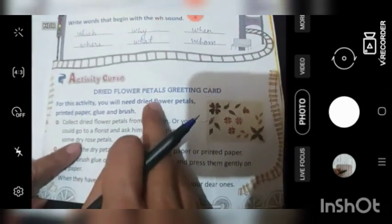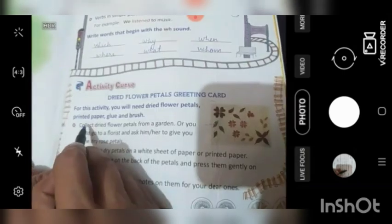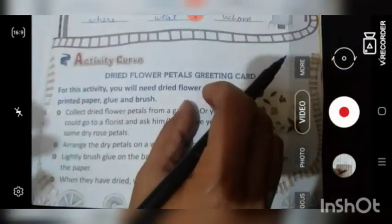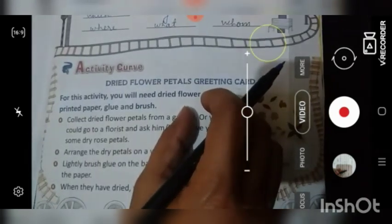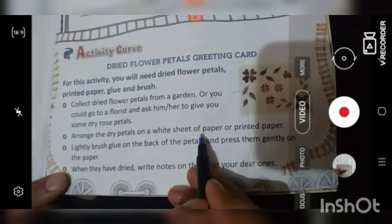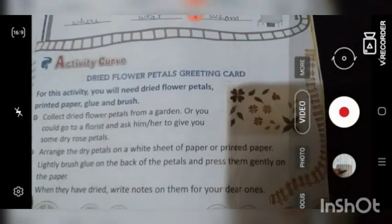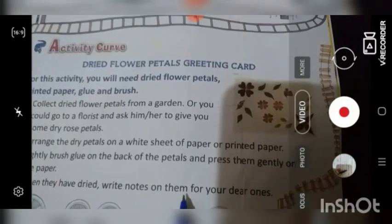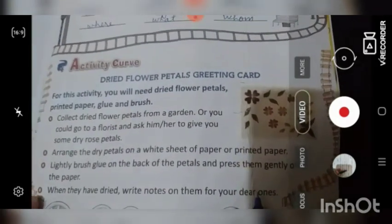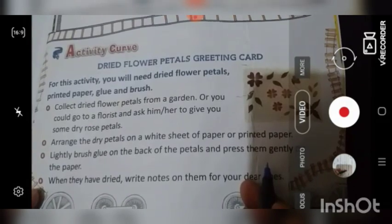So that's all for today. This is a wonderful activity given. If you want to do, you can do it in your notebooks. For this activity, you will need dried flower petals, printed paper, glue and brush. And press them gently on the paper when they have dried. And when they have dried, write notes on them for your dear ones. For your friends, you can make cards. So this is a wonderful activity. If you want to do, you can do this. That's all for today. Have a wonderful day ahead. Take care. Bye-bye.